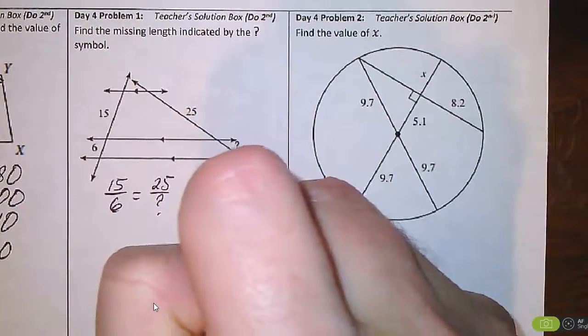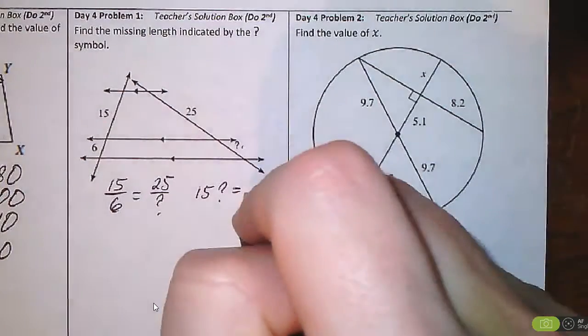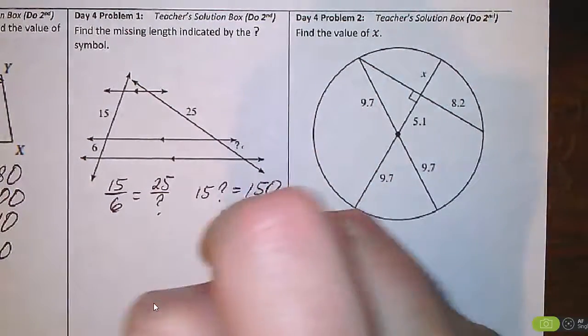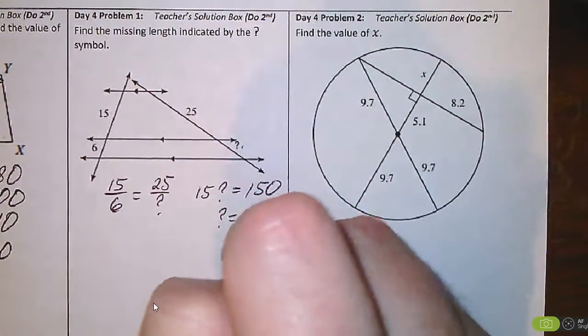15 times the question mark is equal to 6 times 25. That's 150. And so the question mark turns out to be 10.